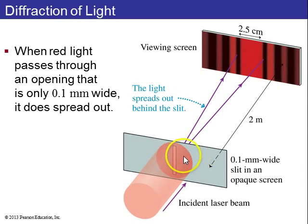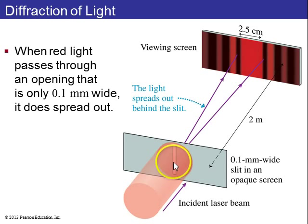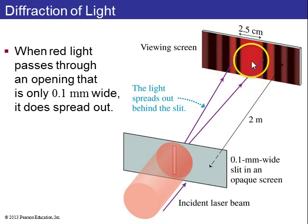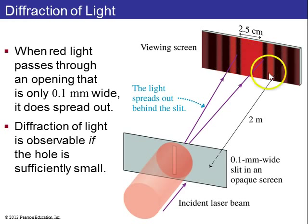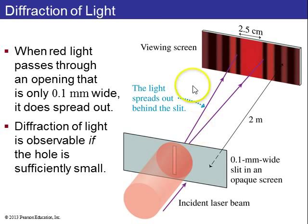But, as it turns out, if you do make the opening very, very small — for example, even a one tenth of a millimeter wide opening — and you shine laser light on it, then you do see some spreading, some diffraction, and some little dark and bright stripes. So diffraction is only observable if the hole is sufficiently small, and that's what we're going to study for most of this chapter.